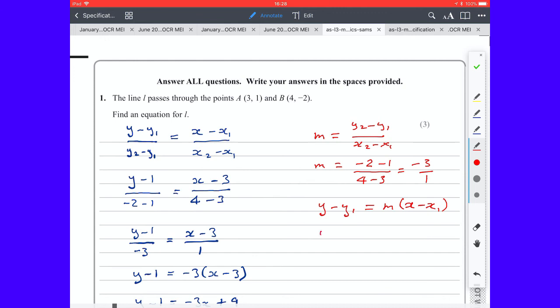And we get y - 1 equals -3 times (x - 3). And we're now at the same position we were in the previous method. y - 1 equals -3x plus 9. y equals -3x plus 10.